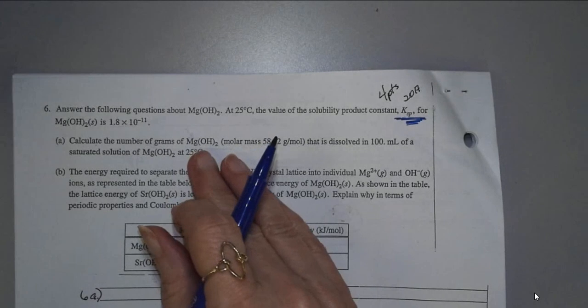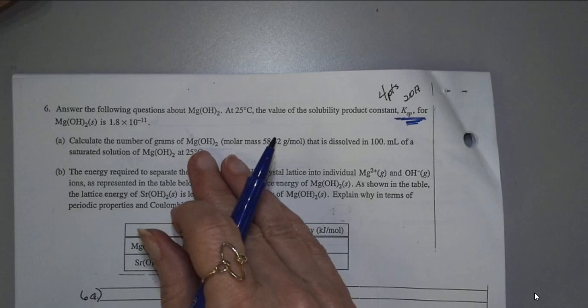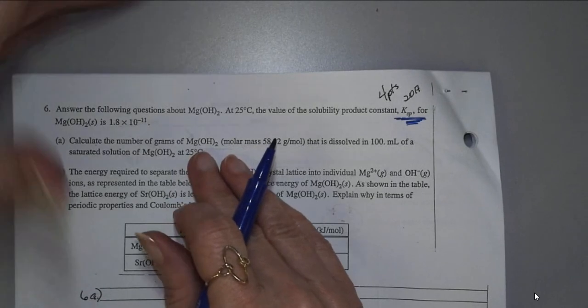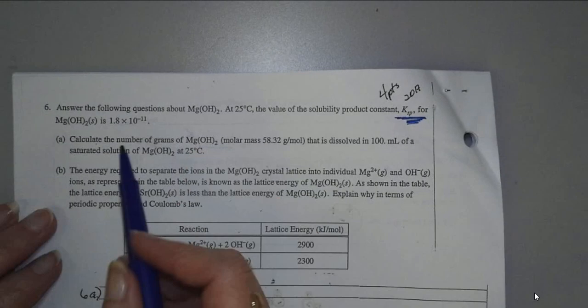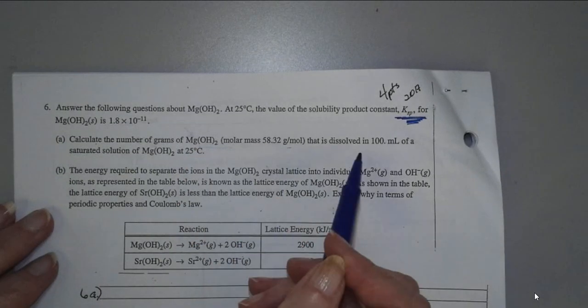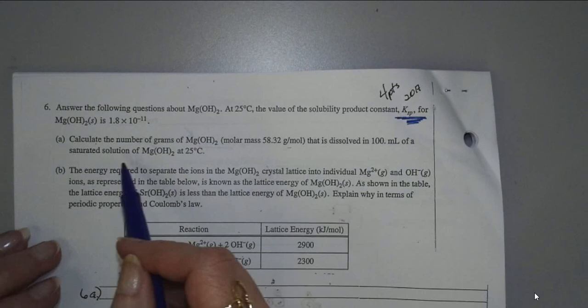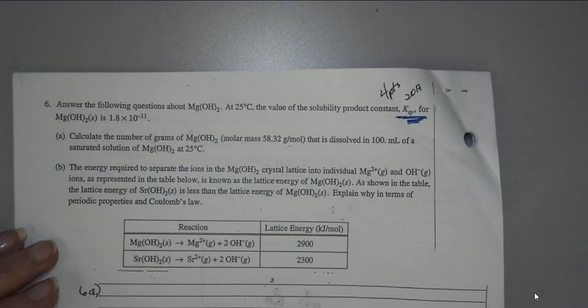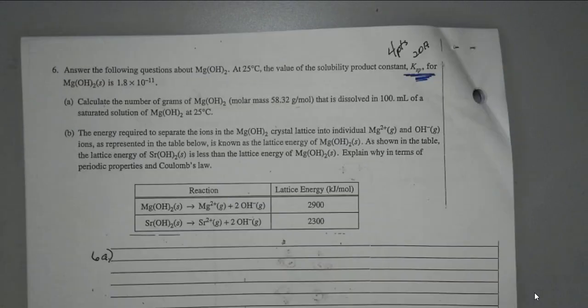But if you have molarity, can't you get moles from that? And then once you have moles, you can change moles to grams. So calculate the number of grams of Mg(OH)2. Here's the molar mass that's dissolved in 100 mils of saturated solution of Mg(OH)2 at 25 degrees Celsius.